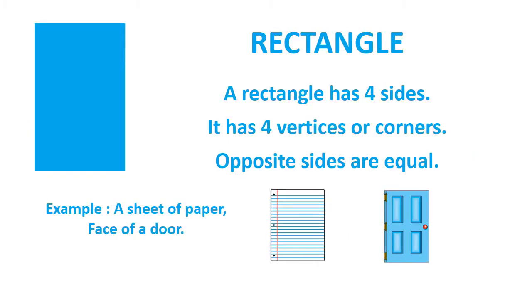Rectangle. A rectangle has four sides. It has four vertices or corners. Opposite sides are equal. Example: a sheet of paper, face of a door.